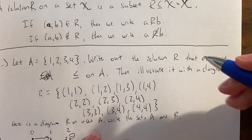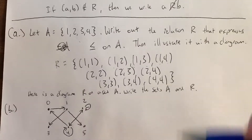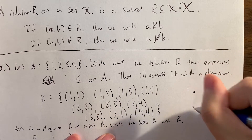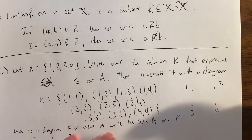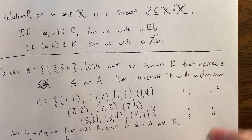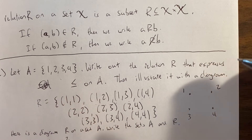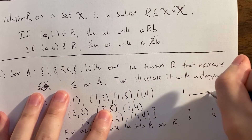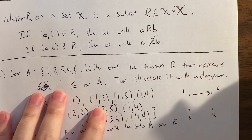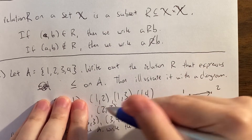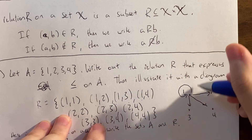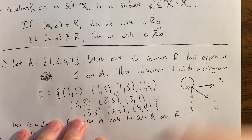Now we'll illustrate this using a diagram. We list out the points of A as dots: 1, 2, 3, and 4. The arrows are what's important — they signify the relation. We draw an arrow where the tail is the first coordinate and the head is the second coordinate. For (1, 2) we draw an arrow from 1 to 2, but not from 2 to 1. We also draw (1, 3) and (1, 4). Since (1, 1) is in R, we draw a little loop at 1 — an arrow starting and ending at 1.